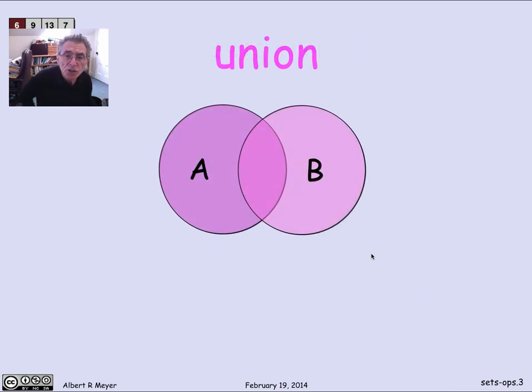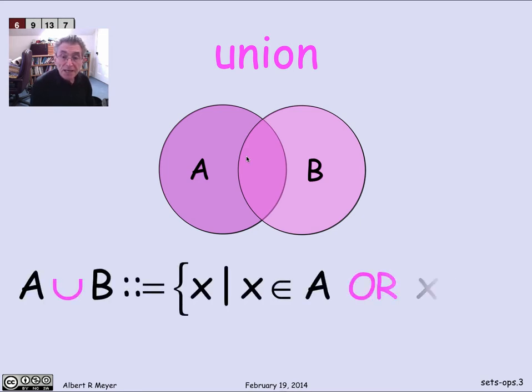So the first operation is union. It's the set of points shown here in magenta. It's the set of points that are in either A or B, all of them. And so if we were defining this in terms of set theoretic notation or predicate notation, the union symbol, the U is the union symbol. So A union B is defined to be those points x that are in A or are in B.